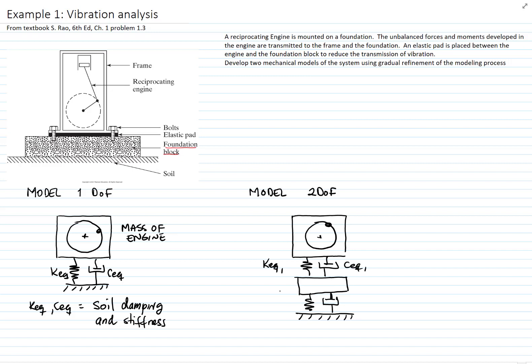We can have an equivalent stiffness and equivalent damping between the engine and the foundation. That equivalent stiffness and damping will consider, for example, the bolts and the elastic pad.